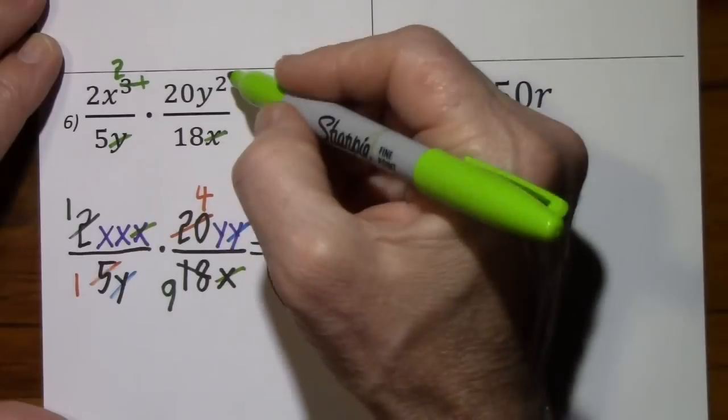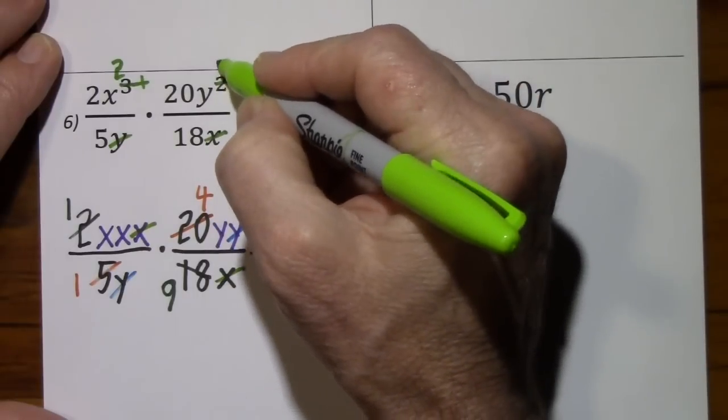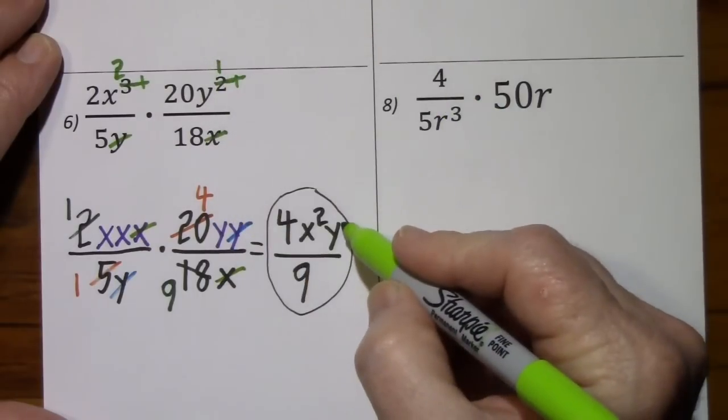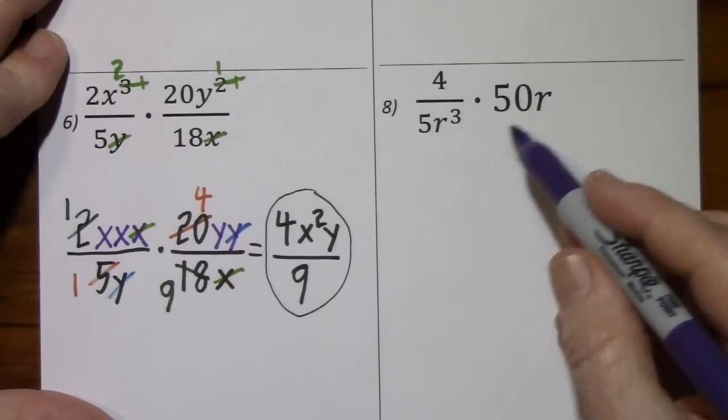y to the first is gone, subtract one, you're left with y to the first. We have y to the first. All right, finally, this is the last one we'll do.